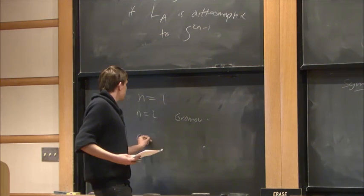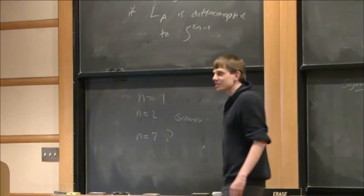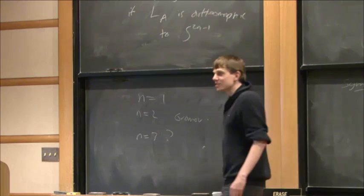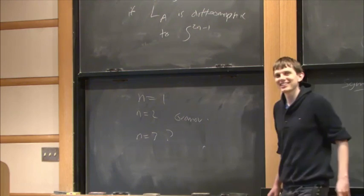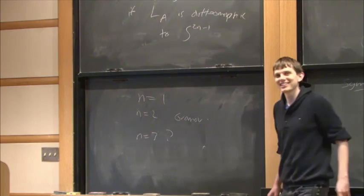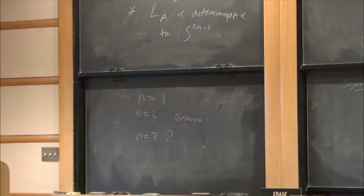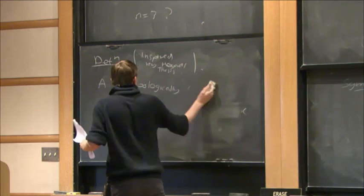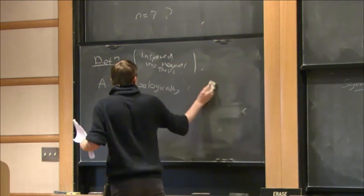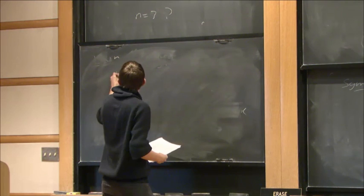I had a dream that I was at a conference, Mohammed Abuzaid was there, and he claimed he could prove this for n=3. He was about to tell me the proof, and then I woke up. There's a more general question: what are the strong symplectic fillings of the (2n−1)-sphere with the standard contact structure?